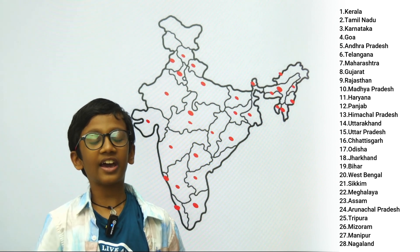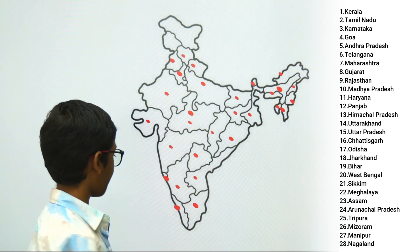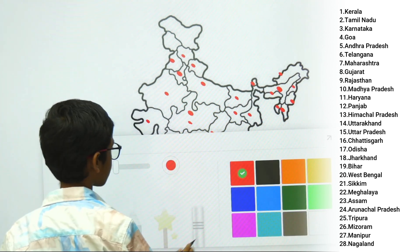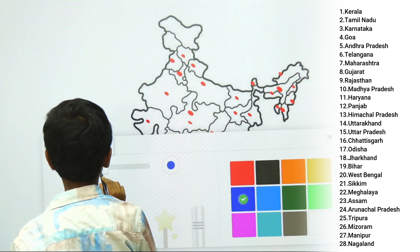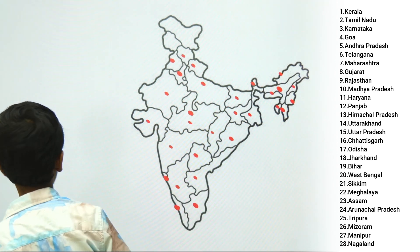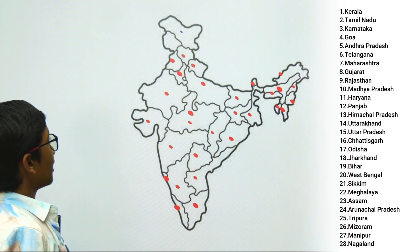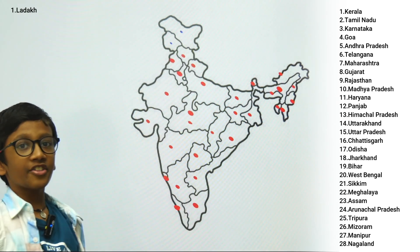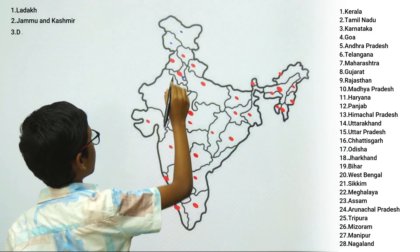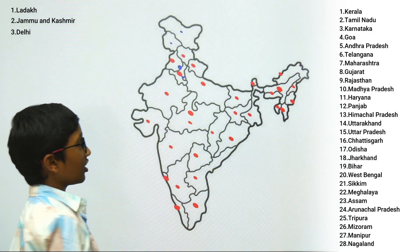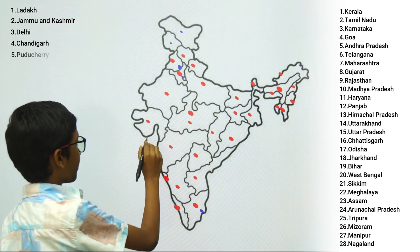Now, I am going to locate the 8 Union Territories of India. Number 1. Ladakh, 2. Jammu and Kashmir, 3. Delhi, 4. Chandigarh, 5. Puducherry.